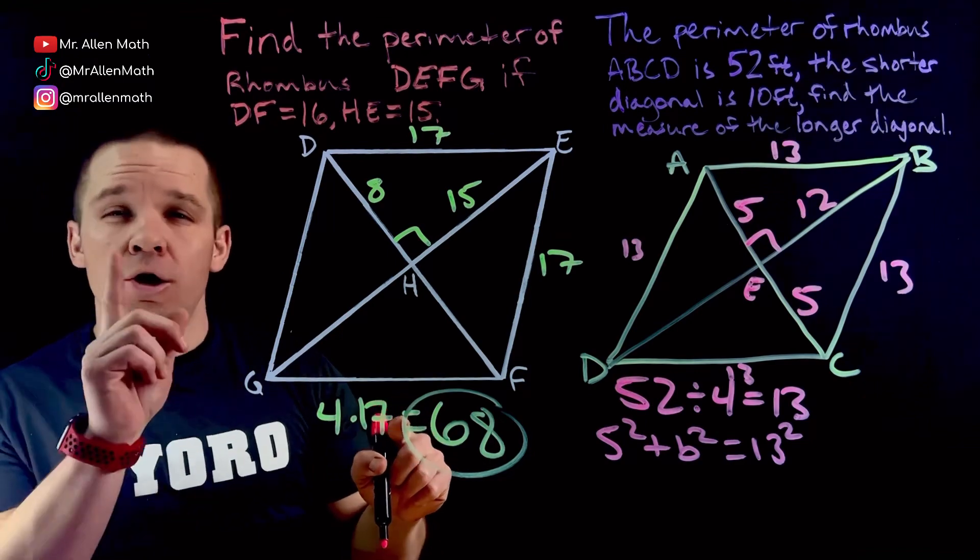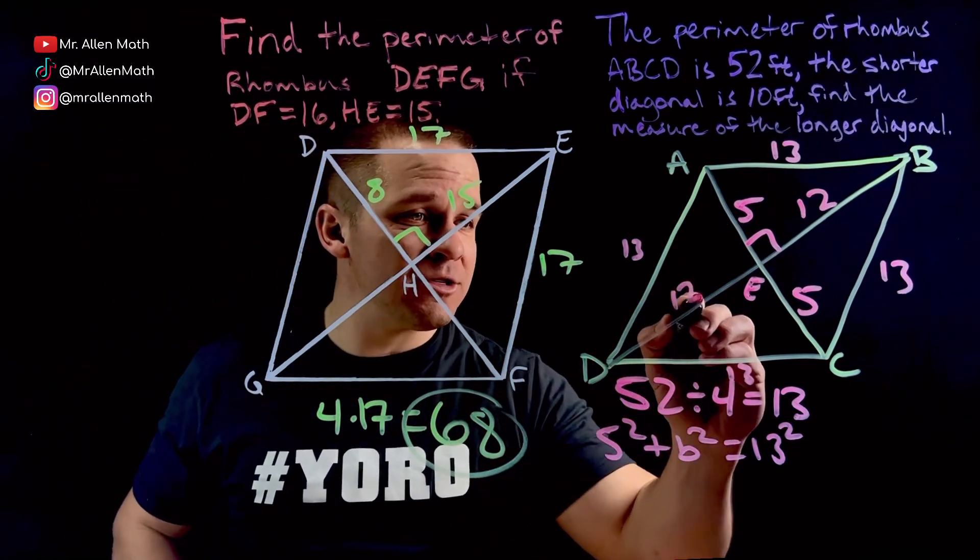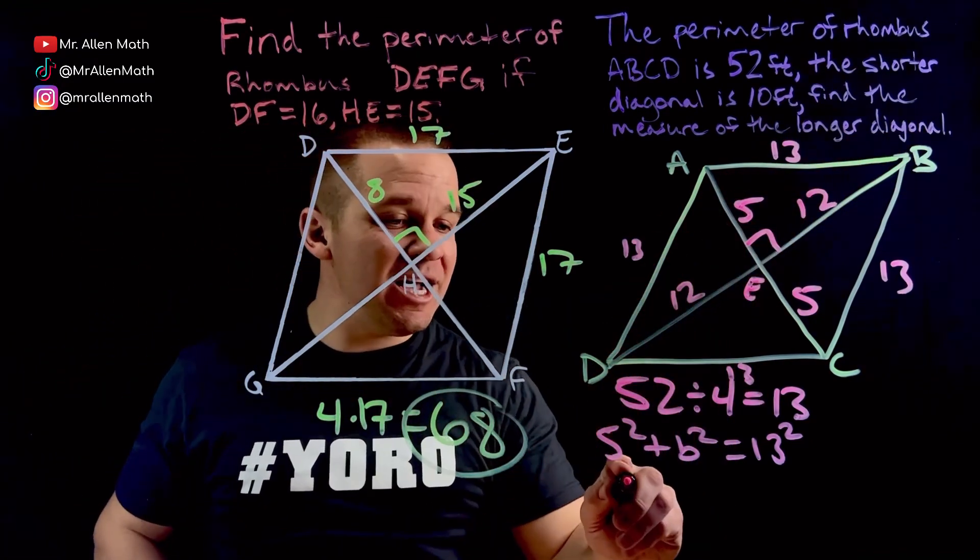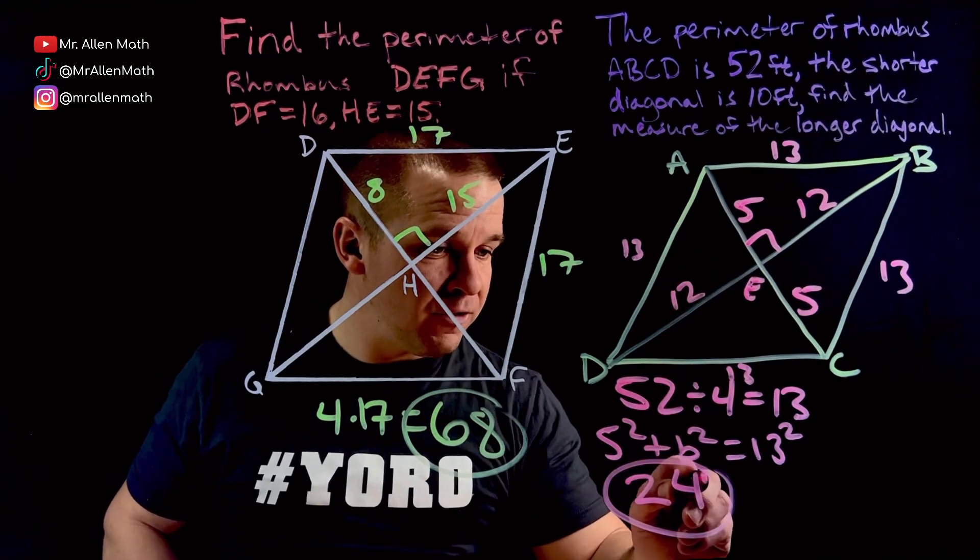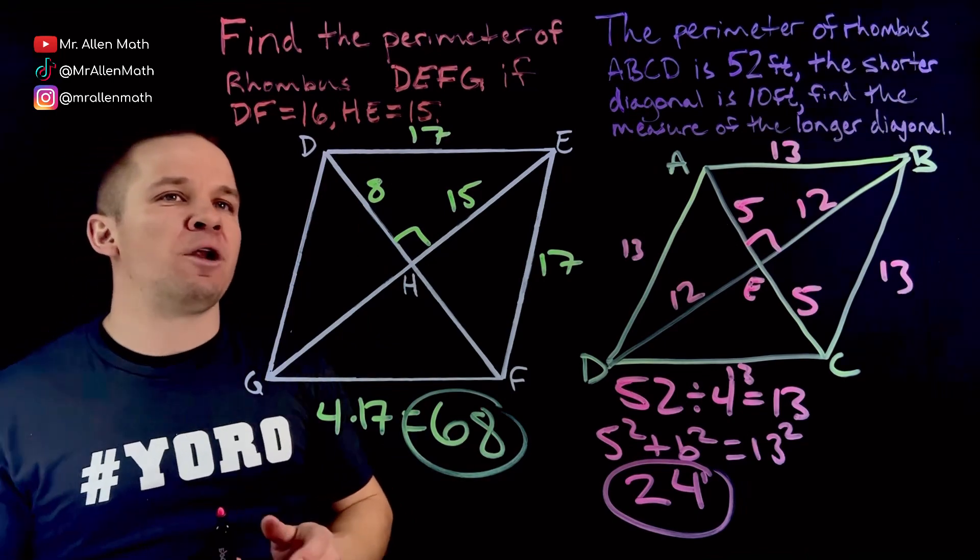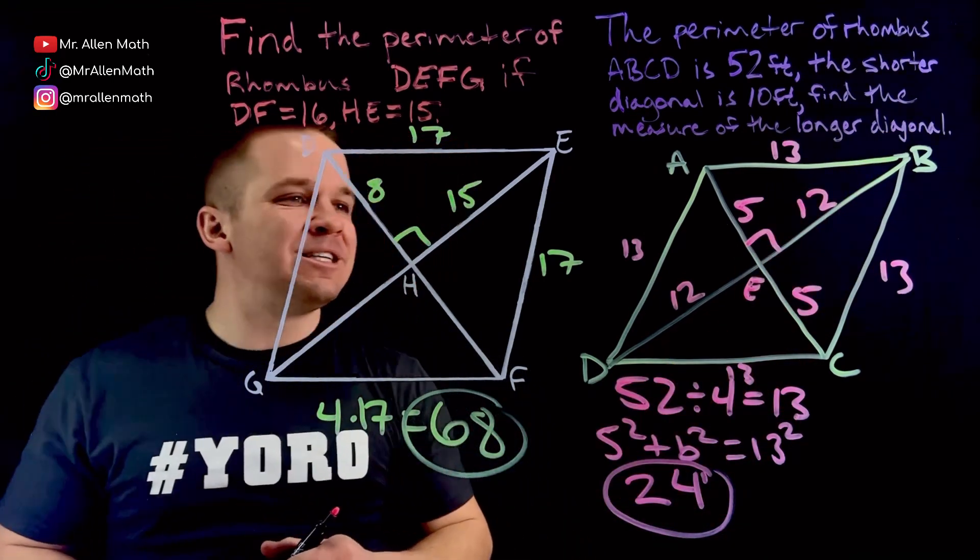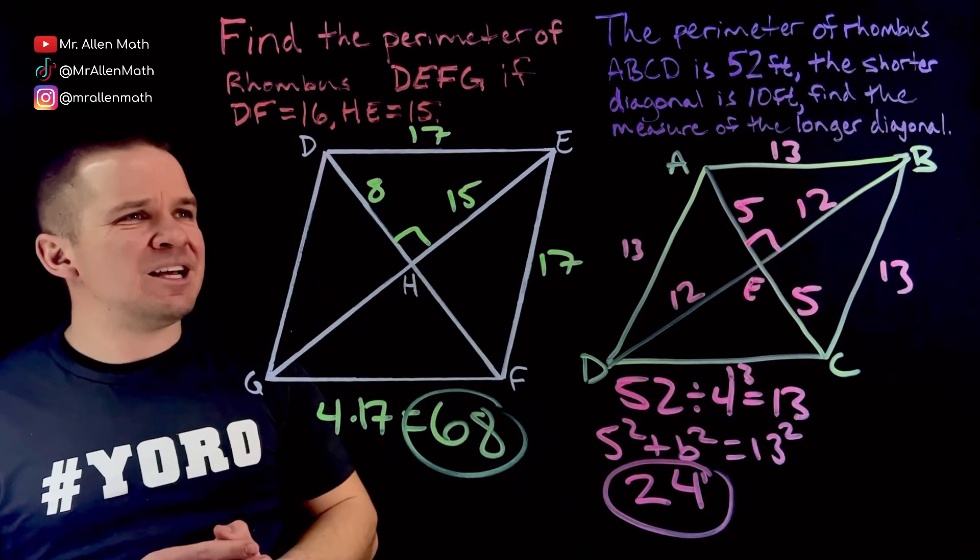But is that my answer? No, this guy is also 12. So my entire diagonal is going to be 24. 24. We're in feet. Feet. Boom. Had just enough room right there. So 24 feet for the longer diagonal there. 12 plus 12. That is dope.